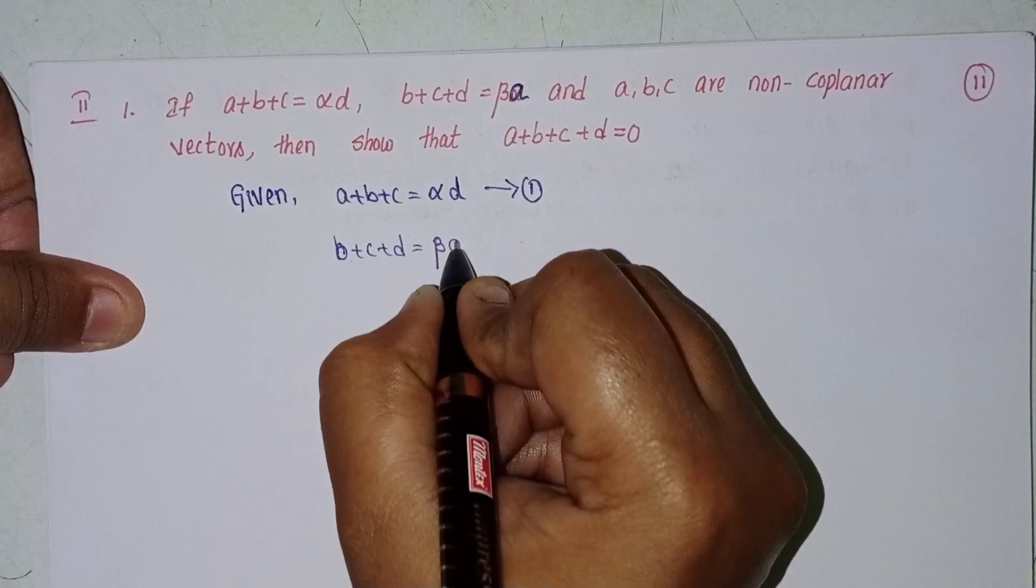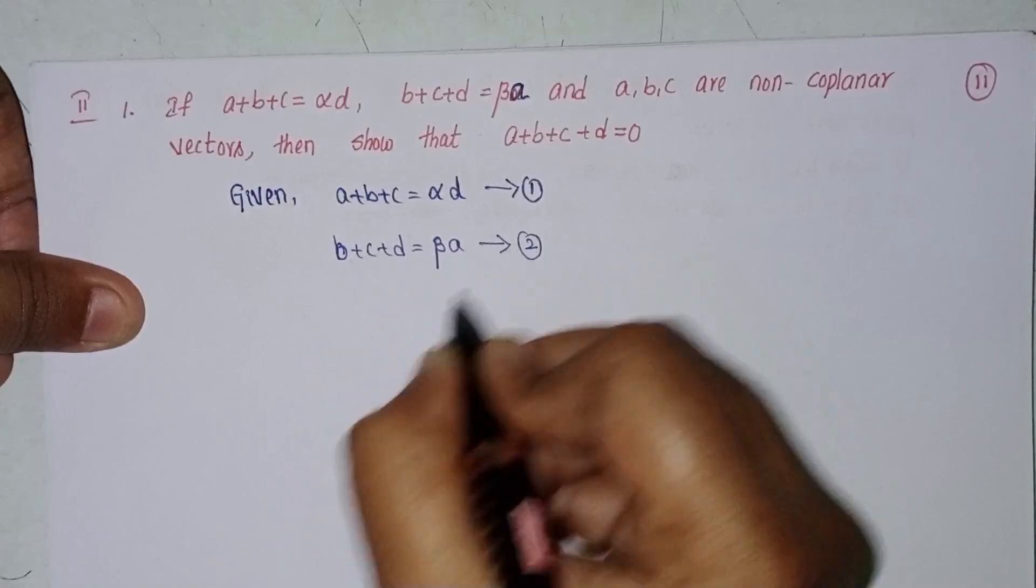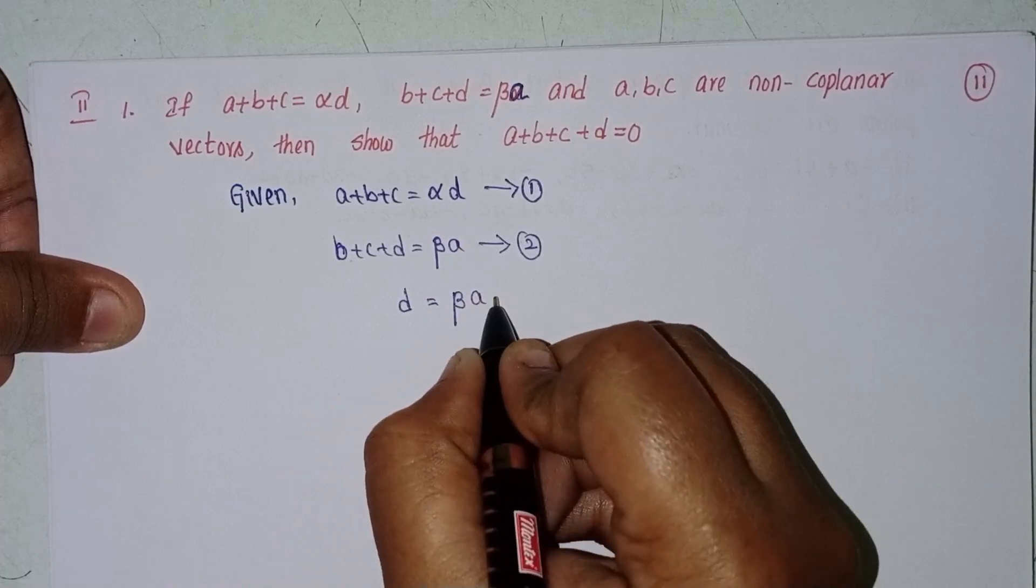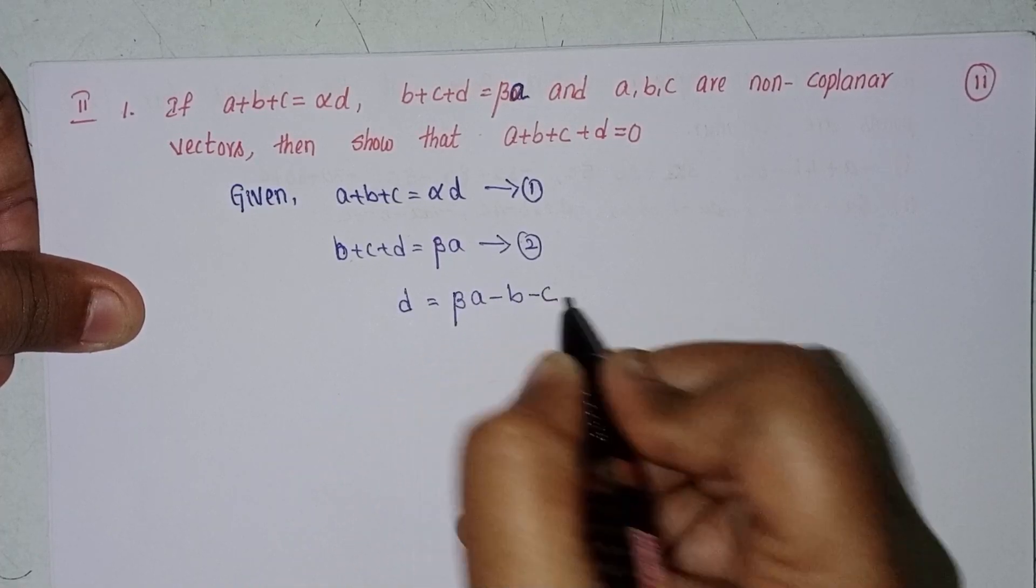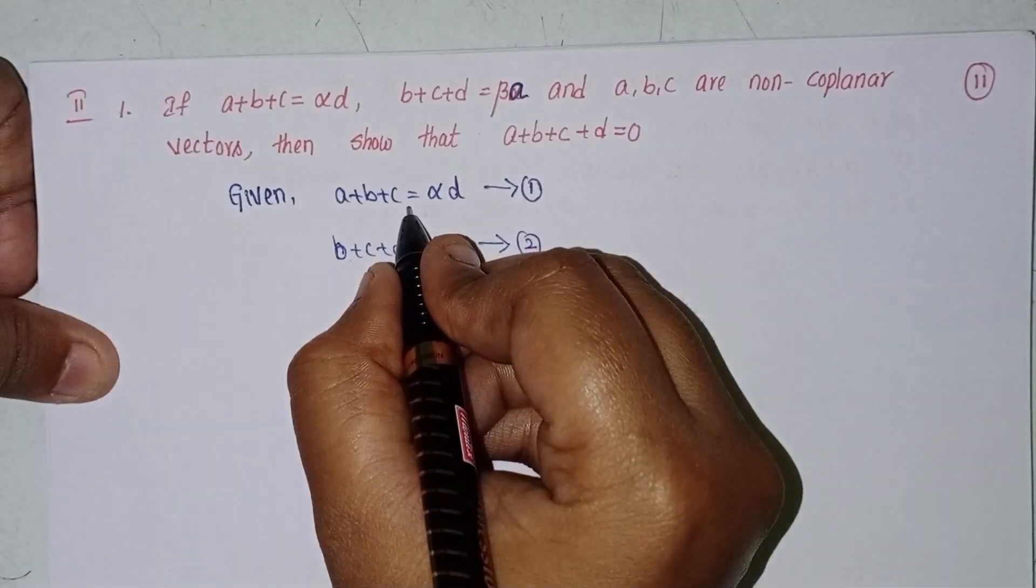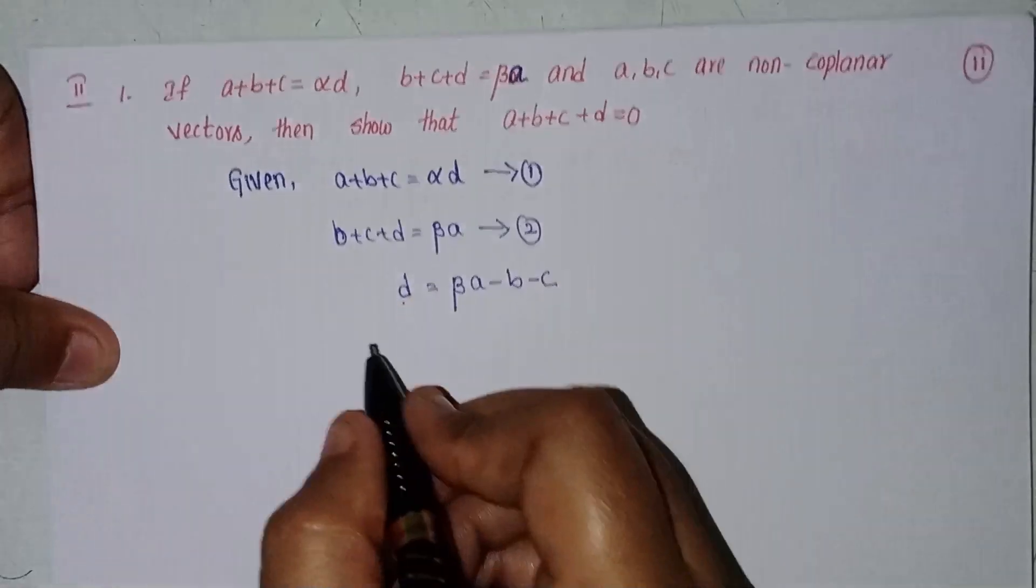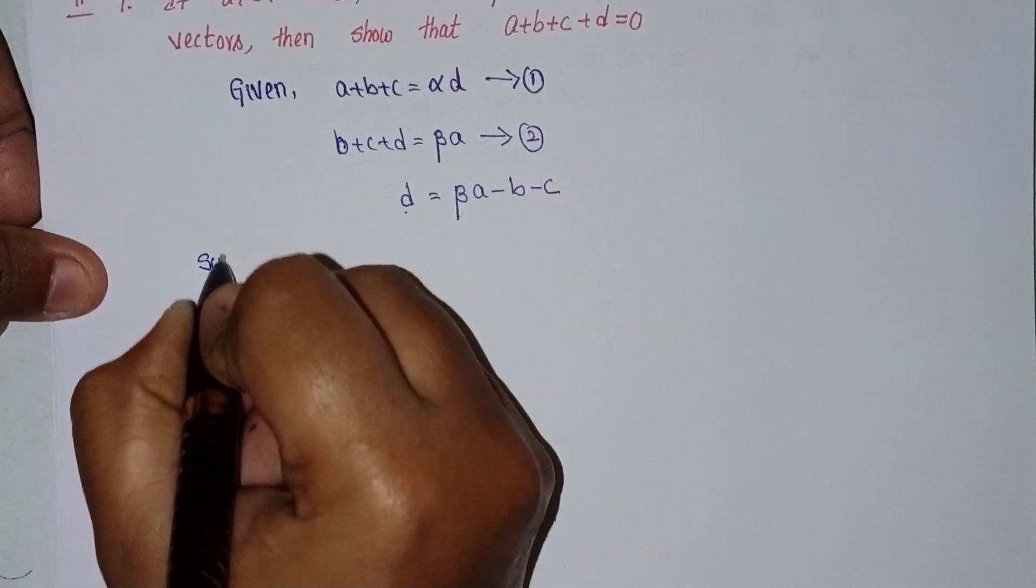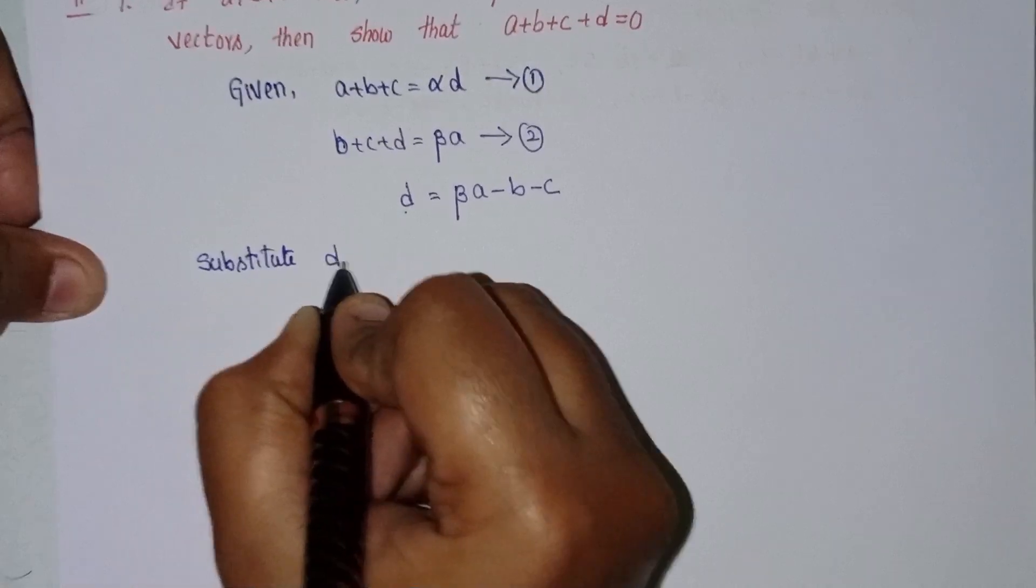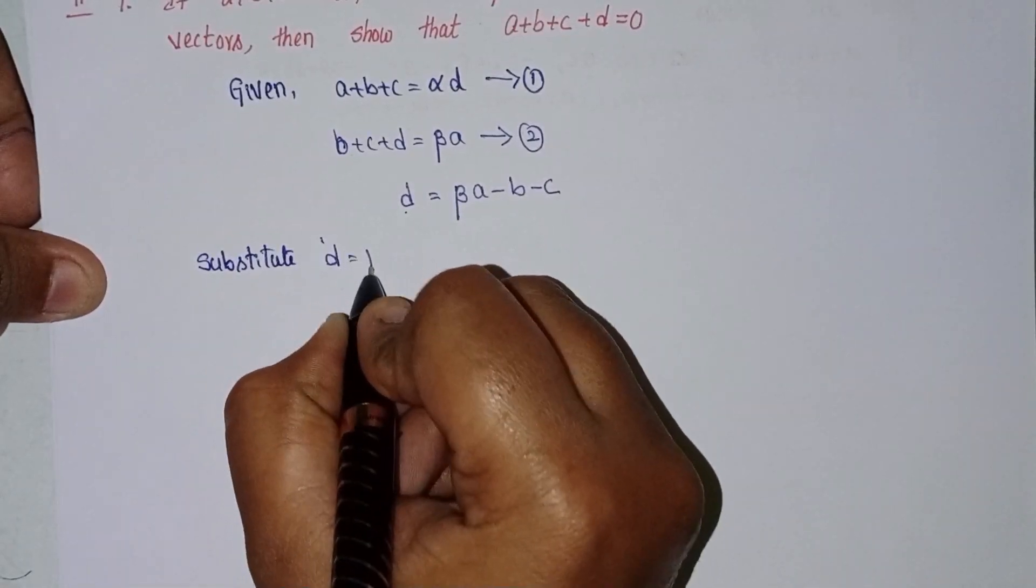Now we can write d equal to beta into a minus b minus c. Substitute d equal to beta into a minus b minus c in equation 1.